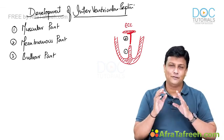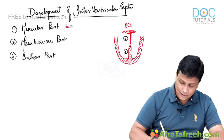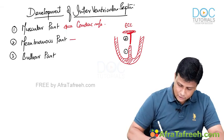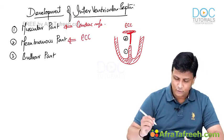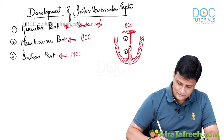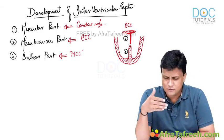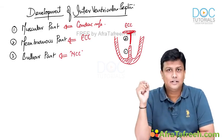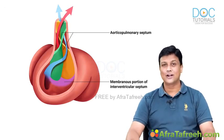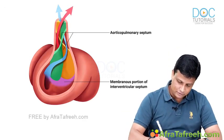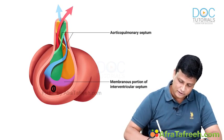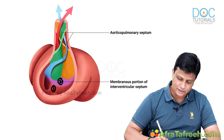So the muscular part of the interventricular septum is derived from cardiac muscles — the myocardium. The membranous part is derived from the endocardial cushion. The bulbar part is derived from neural crest cells. In this diagram you can appreciate: number one — the muscular part, number two — the membranous part, and just above that, number three — the bulbar part.